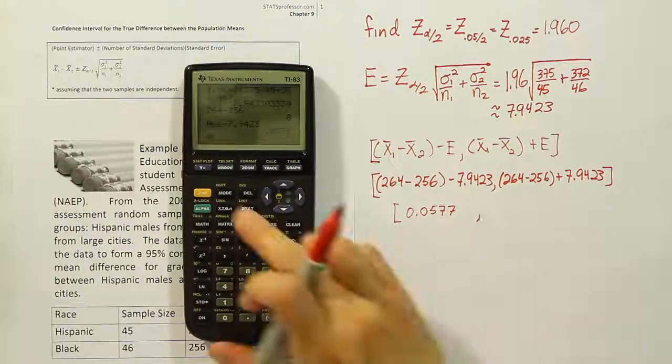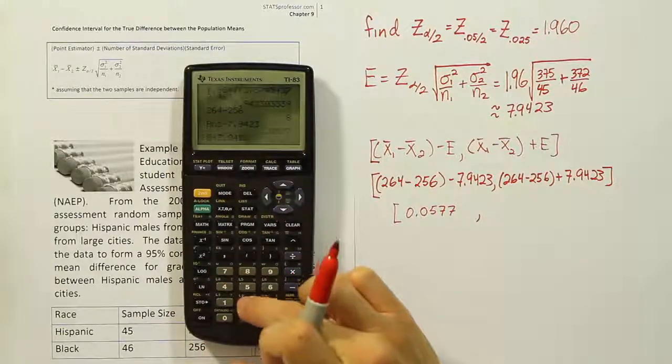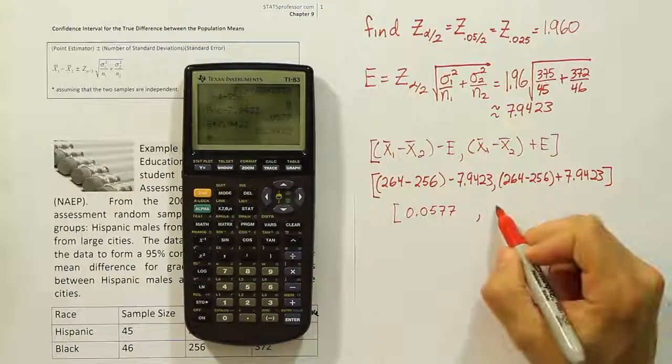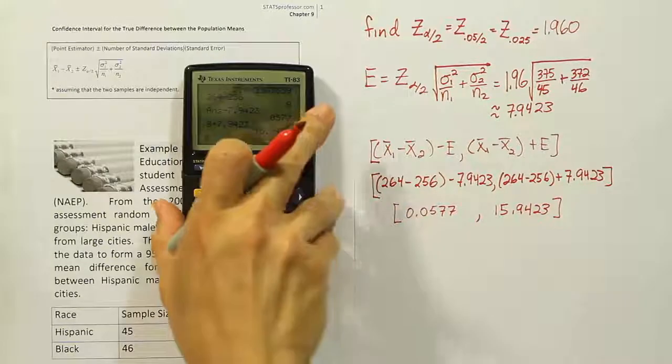And then the other side we add, so we'll do 8 plus 7.9423. And when we're finished with that, we get 15.9423. All right, so that part's easy enough.